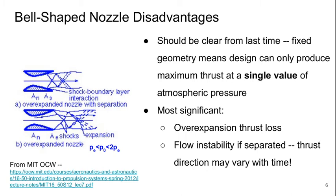But there are some disadvantages too, and this should be clear from our discussion in Lecture 2. The fixed geometry and shape of these nozzles means that the design can only produce the maximum possible thrust at a single value of back pressure or atmospheric pressure. We can have both over-expanded or under-expanded nozzles, and if the nozzle is over-expanded, we can experience separation in the nozzle like we talked about last time.